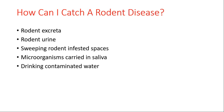How can one catch a rodent disease? Firstly, through inhalation or direct contact with rodent excreta like urine, feces, and saliva. Secondly, by handling or inhaling microorganisms, parasites, particles, and other materials contaminated with infectious rodent urine, and particles aerosolized by sweeping rodent-infested areas.